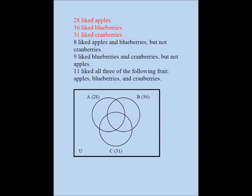Now let's fill out the diagram. Eight like apples and blueberries but not cranberries — that's where 8 goes. Nine like blueberries and cranberries but not apples — so 9 goes there. 11 liked all three, so 11 goes in the center. We can subtract 8, 11, and 9 from 36 to find the blueberry-only region, which is 8, since 8 plus 8 plus 11 plus 9 equals 36.